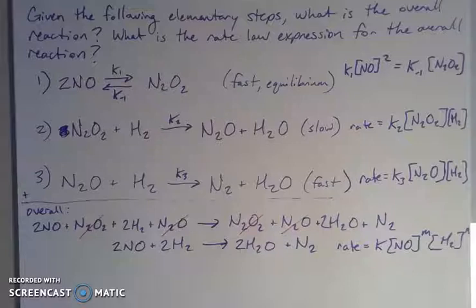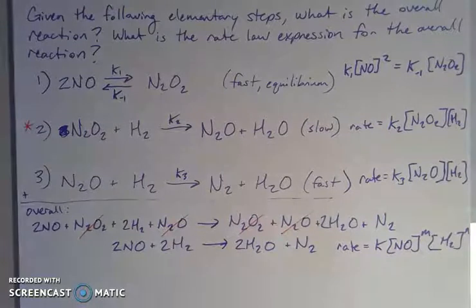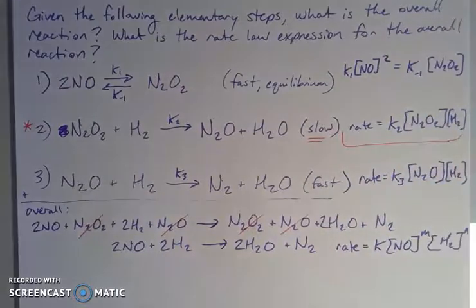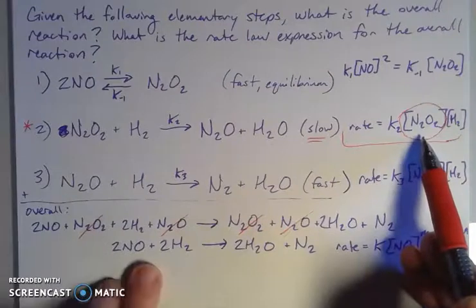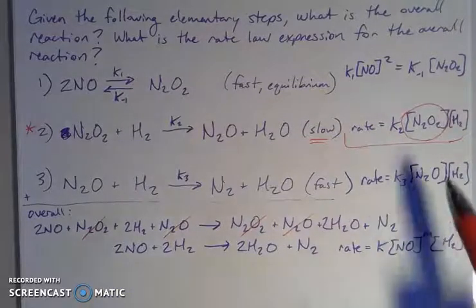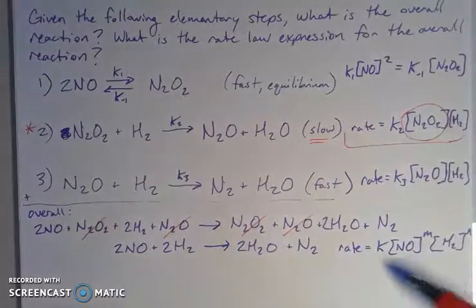If I'm thinking about the rate determining step, my rate is going to be determined by my slowest step — the weakest link. The slowest of my steps gives the rate of my overall reaction. That's the rate of the overall reaction. But that's problematic because this piece says that the rate of the overall reaction is going to be dependent on the concentration of something that isn't in my final reaction — [N₂O₂] is not in the final reaction.